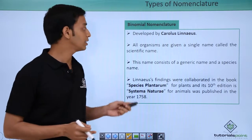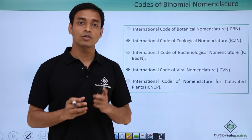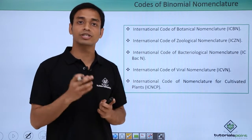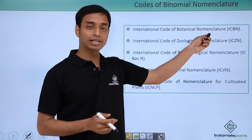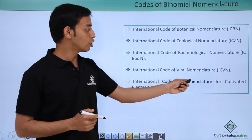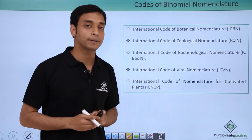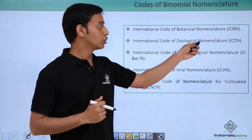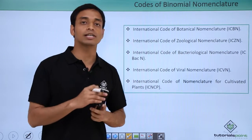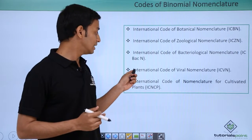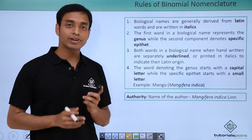There are certain codes for binomial nomenclature maintained by international organizations. For plants, we have the International Code for Botanical Nomenclature (ICBN) and the International Code for Nomenclature of Cultivated Plants (ICNCP). For animals, there is the International Code for Zoological Nomenclature (ICZN). For bacteria, there is the International Code for Bacteriological Nomenclature, and for viruses, the International Code for Viral Nomenclature (ICVN).